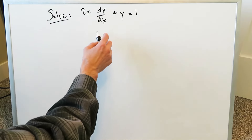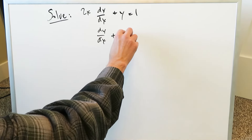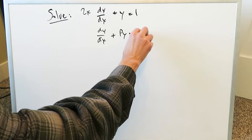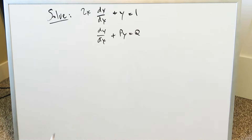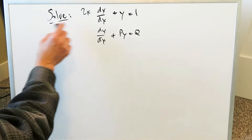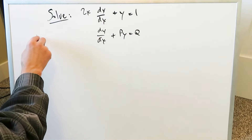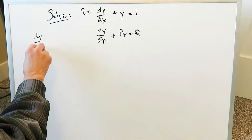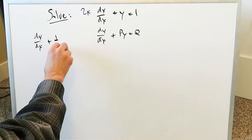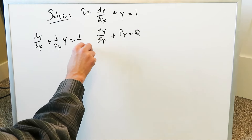Everything here looks like dy/dx plus py equals q. You have to convert it into that form and then go from there. When you're looking at this you have to divide everything by 2x. When you divide this entire expression by 2x you'll have dy/dx plus 1 over 2x times y is equal to 1 over 2x.